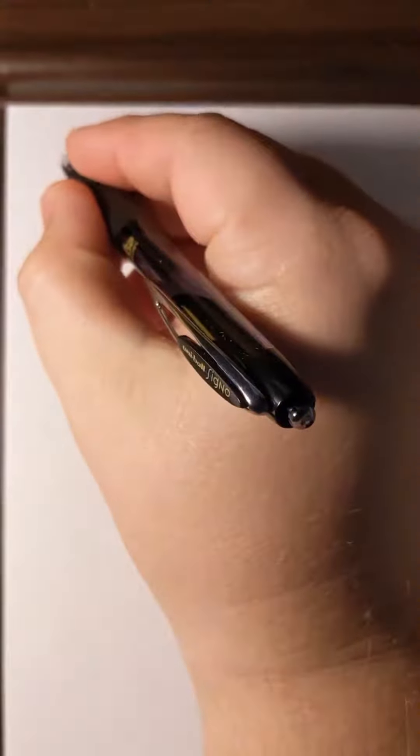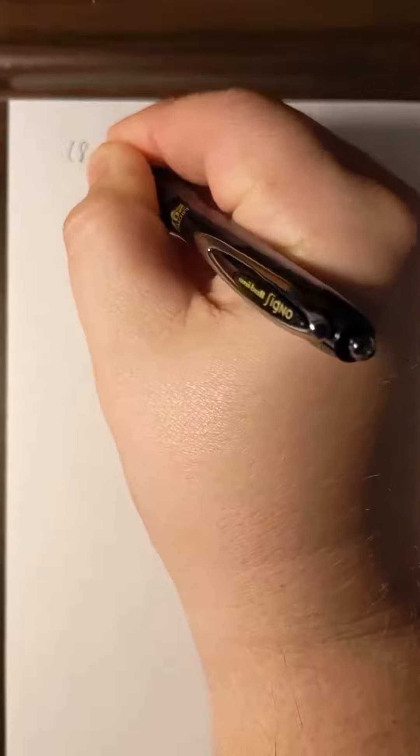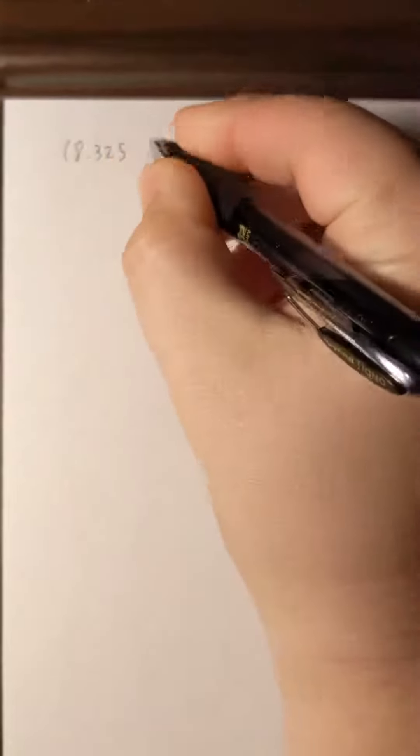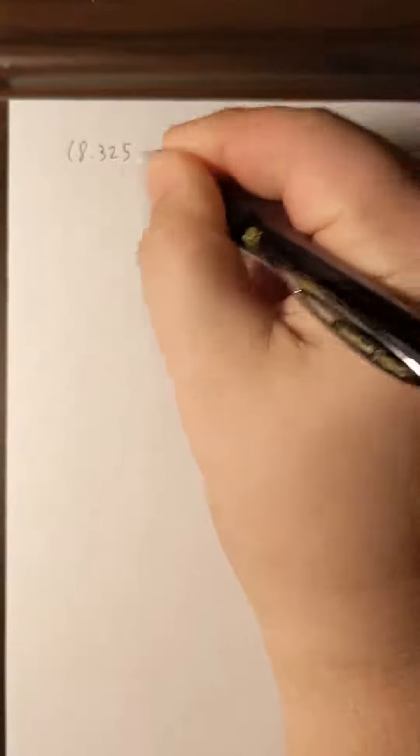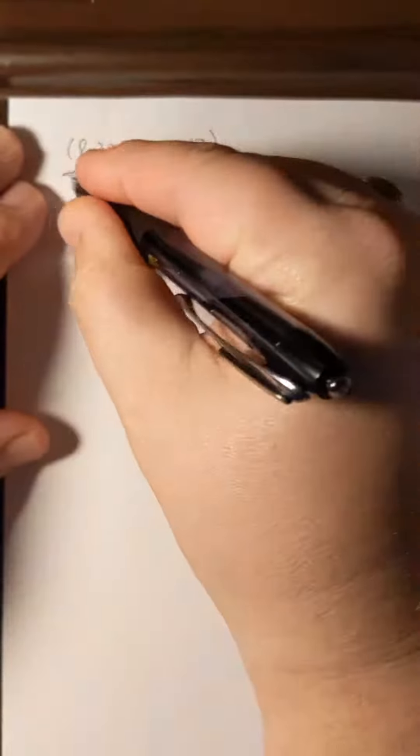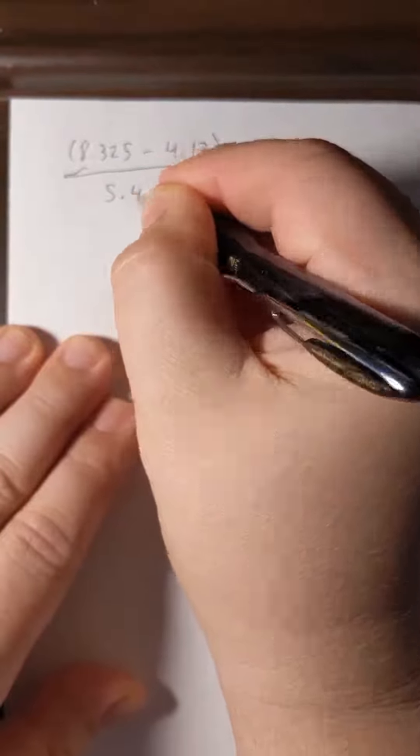In this problem we want to look at multiplication and division along with addition and subtraction in doing the significant figures problem. We will start out by writing our problem. It'll be 8.325 minus 4.17 and that quantity will be over 5.4.